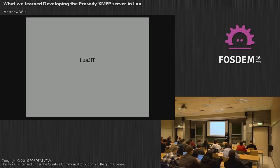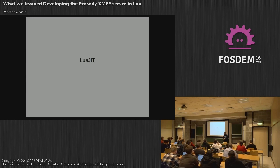Speaking of memory usage, standard Lua has been great. String interning has really been helpful — it helps with memory usage and also with speed, since we have a lot of short strings in XMPP that we need to compare. The only place it is a pain is in our network buffers where we're handling arbitrary data from the network, and that's something we're hoping Lua 5.2 will resolve, which we haven't yet moved to.